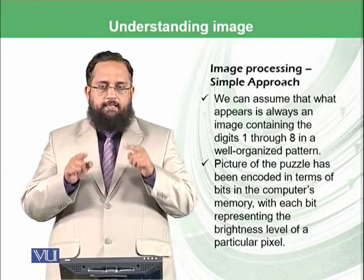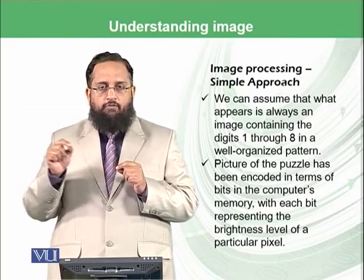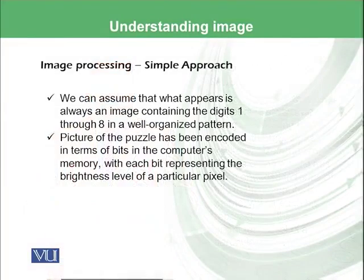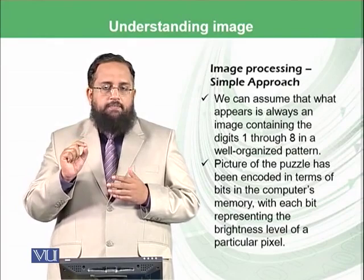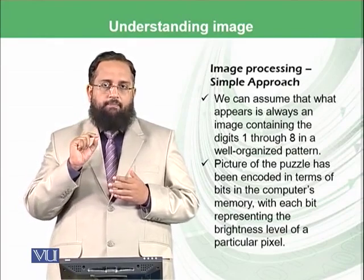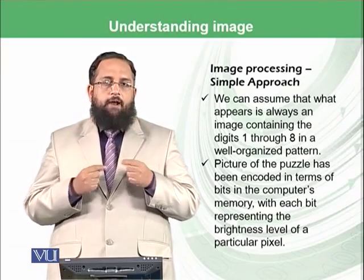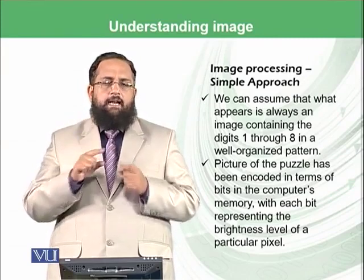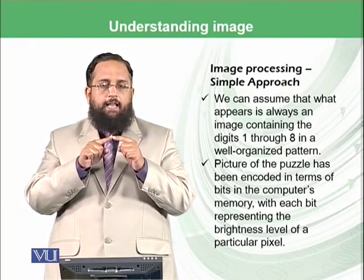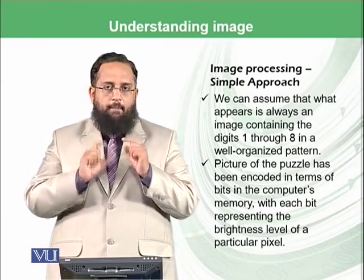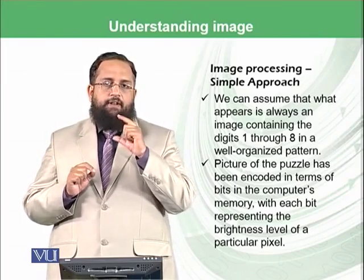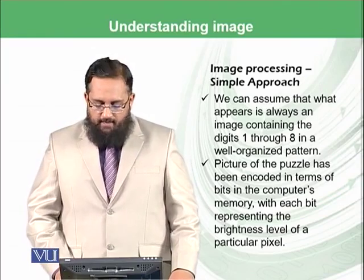In our example, there is a particular size of a square and each square might have digits 1 through 8. So we should not be worried about any number greater than 8 or any number less than 1. The picture of the puzzle has been encoded in terms of bits in computer memory. The digit 1, for example, is written with a predefined pixel pattern. If you take that square — say 100 by 100 pixels — and find that certain pixel positions like 28, 39, 49, 59, 69 are brighter or less bright, that indicates the digit 1 is written there, with each bit representing the brightness level at a particular pixel.